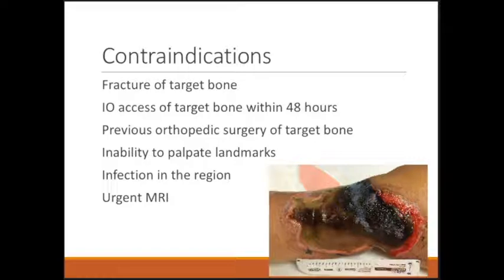In this example, someone used a needle that was too short to get into the tibia. They drilled in, the needle fell out, drilled again — the needle fell out again, then drilled a third time and it stuck. But when they infused pressors, the fluid leaked out of those holes in the cortex and into the subcutaneous tissue, causing soft tissue necrosis. So if the cortex of the bone has been violated — by a previous IO attempt, a fracture, or orthopedic surgery — do not place an IO catheter there.